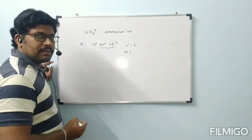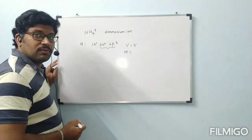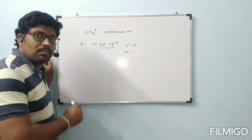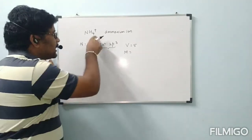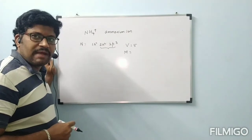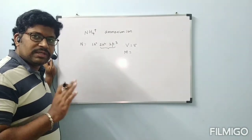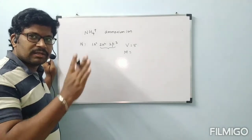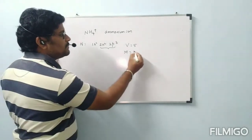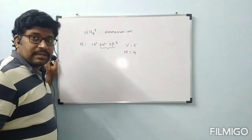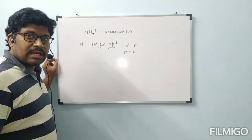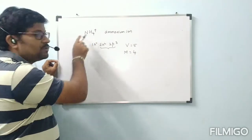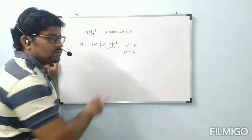Next, M is the number of monovalent atoms bonded to the central atom. Hydrogen is monovalent because its valency is 1. In NH4+, 4 hydrogen atoms are bonded to the central atom nitrogen. So M is equal to 4.